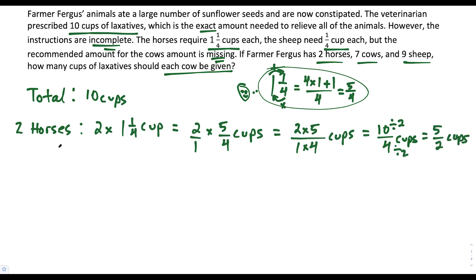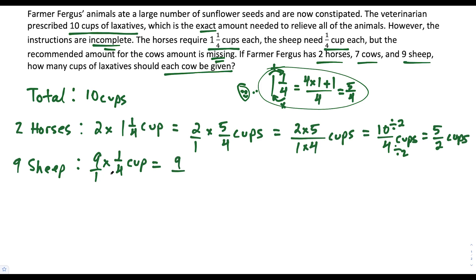So now we can move on to the sheep. There are 9 sheep in total. How many cups of laxatives do all the sheep need? The 9 sheep need 9 times 1/4 of a cup each, so we multiply 9 times 1/4. We write this as 9/1 times 1/4, giving us 9 times 1 is 9, over 1 times 4 is 4. So the sheep need 9/4 cups.